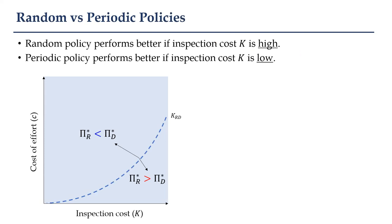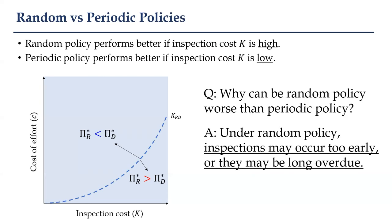Let's now talk about the heart of the matter, the article's findings. We start with a comparison of two prevalent audit strategies: the random, or surprise, and periodic, or announced-type policies. Interestingly, we find that the periodic audit policy can outperform the random audit policy in banks' operation risk management, challenging the widely accepted virtue of the surprise effect in audit practices. While the random policy can help motivate employees to put more effort into preventing mistakes, a completely random audit schedule also means that audits are sometimes conducted too soon, wasting inspection costs, or they can be long overdue, allowing operational risk to accumulate and potentially exacerbate losses.